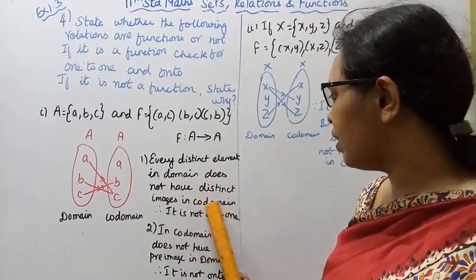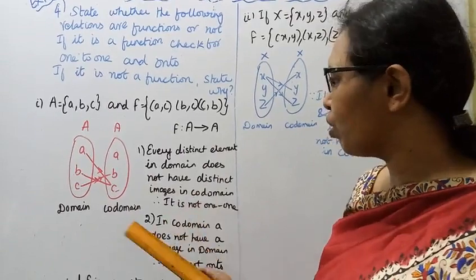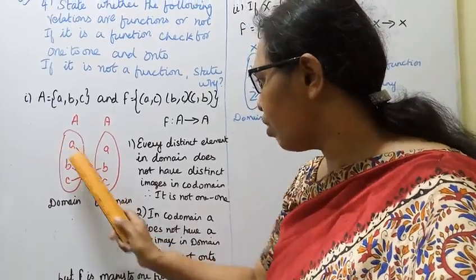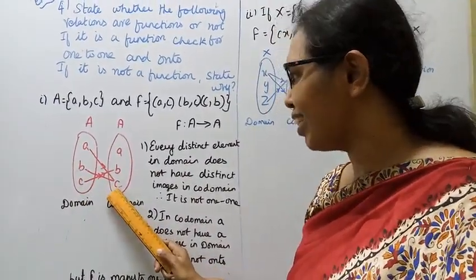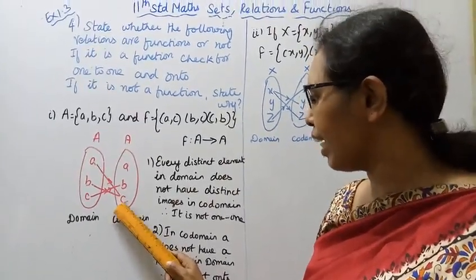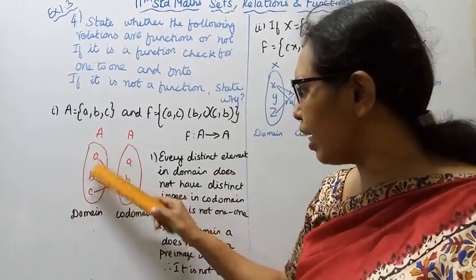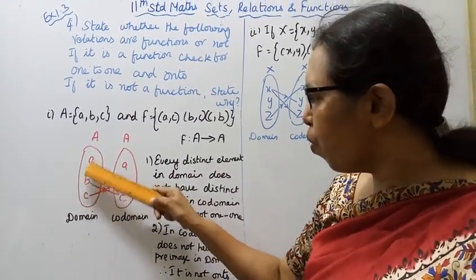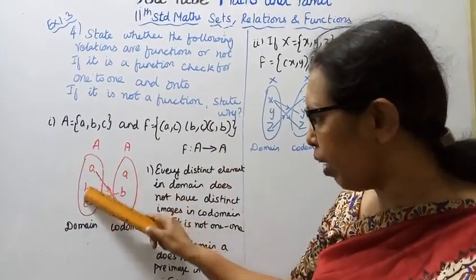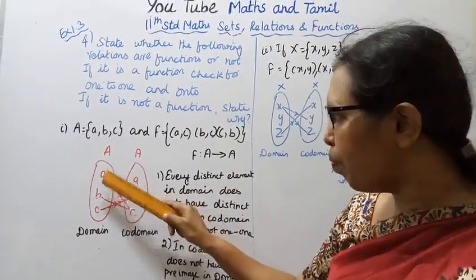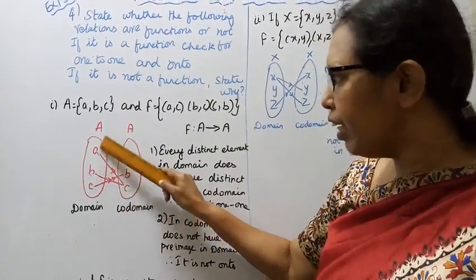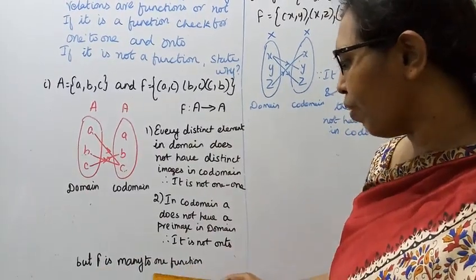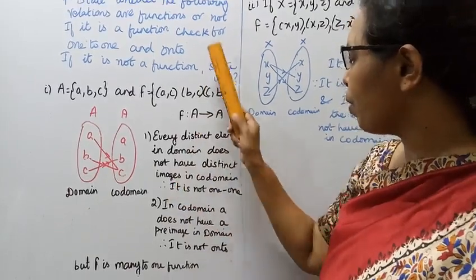It does not have distinct images in codomain, therefore it is not one to one. It is a many to one. More than one element map to one image. F is a function. F is many to one function.